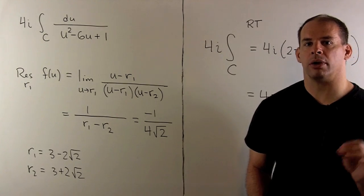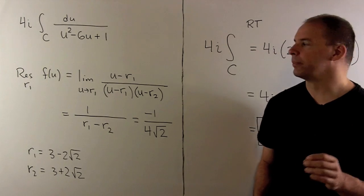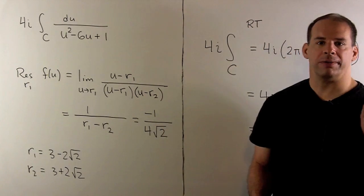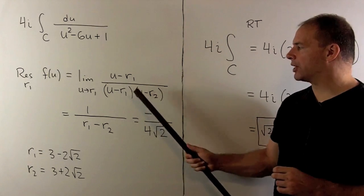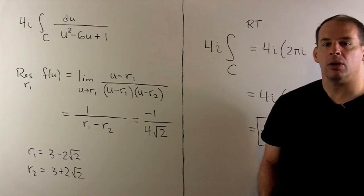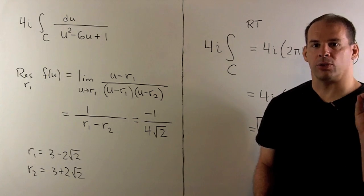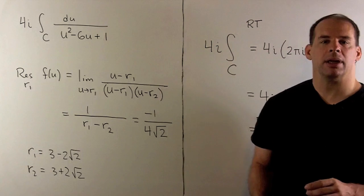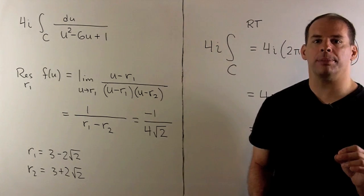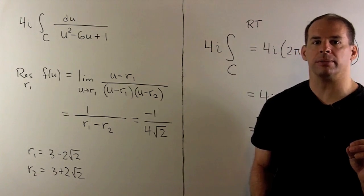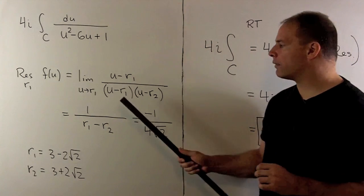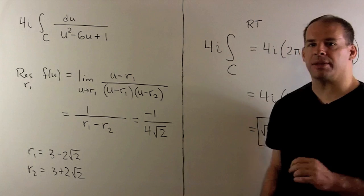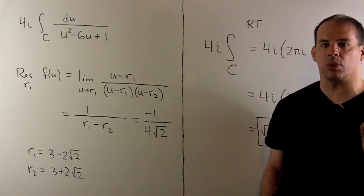Let's compute the residue of our integrand at R1. Take the denominator. We factor. It becomes U minus R1, U minus R2. We have a simple pole. So, you get the residue. I just multiply by U minus R1. Then, we take the limit as U goes to R1, which is the same as evaluation. So, we have 1 over R1 minus R2. That simplifies to minus 1 over 4 times square root of 2.